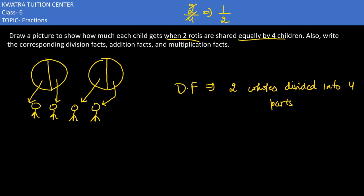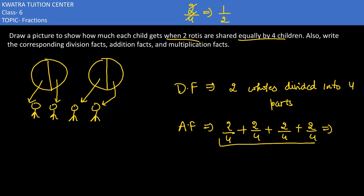Addition facts mein kya ho jayega? You would be having two by four to the first, two by four to the second, two by four to the third, and two by four to the last. Ye sum total kya banna chahiye? It must be two rotis. Ab sab add kar do: two plus two is four, four plus two is six, six plus two is eight. Eight by four would give you two rotis — two wholes.